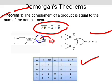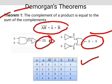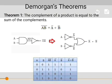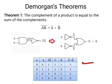A into B whole complement is equal to A complement plus B complement. In this table, the third column and the sixth column are equal, which confirms that A into B whole complement equals A complement plus B complement.